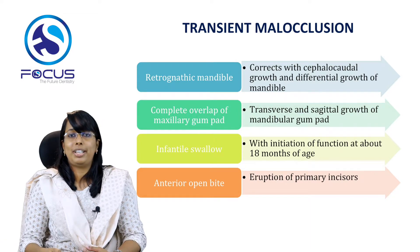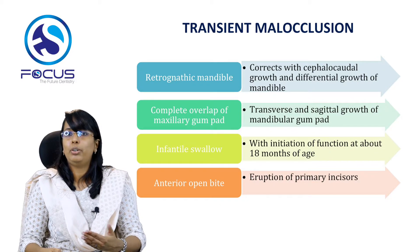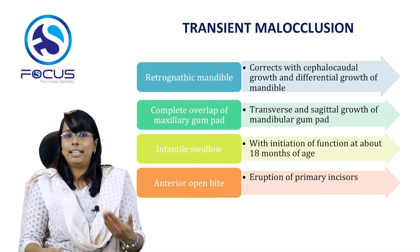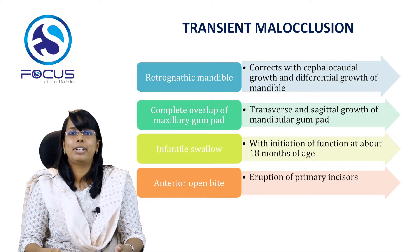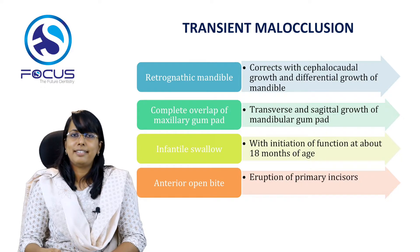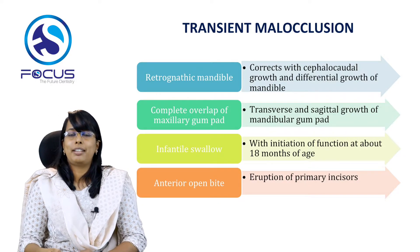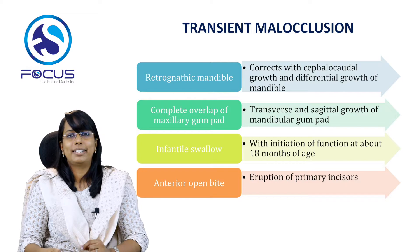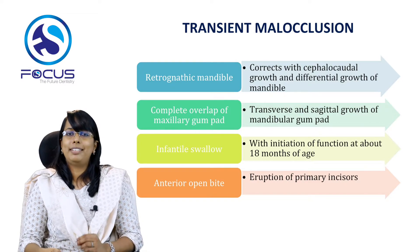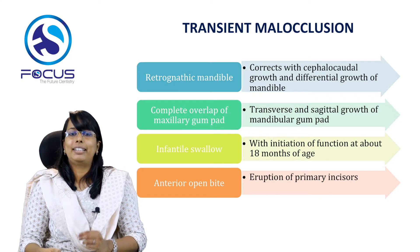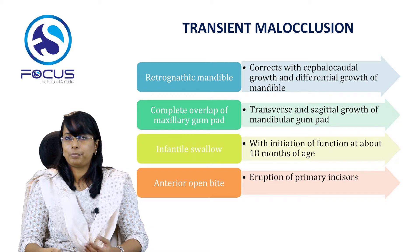Transient malocclusions are self-correcting anomalies — they appear as malocclusions at a particular point in time but correct on their own without any intervention. The first transient malocclusion seen during the gum pad stage is a retrognathic mandible. When the gum pads occlude, the mandible appears more distally placed compared to the maxilla, but this corrects with cephalocaudal growth and differential growth of the mandible.